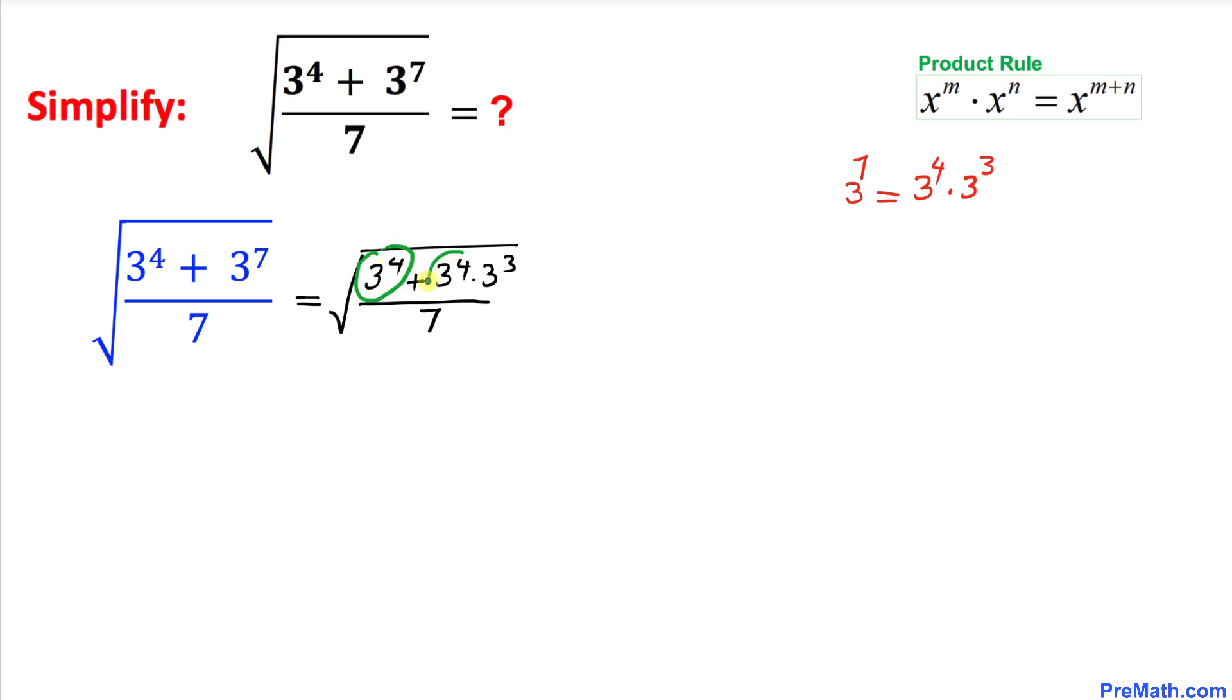Now we can see that 3 power 4 is in common in both these terms, so we can write this fraction as, here we can factor out 3 power 4, and inside this parentheses is going to be 1 plus 3 power 3 divided by 7.